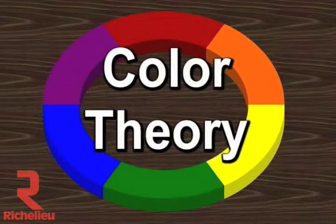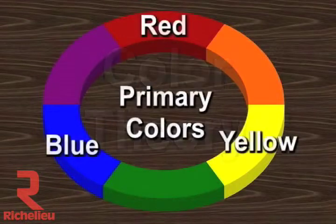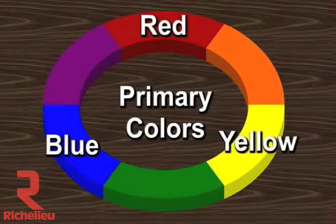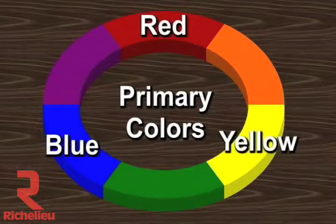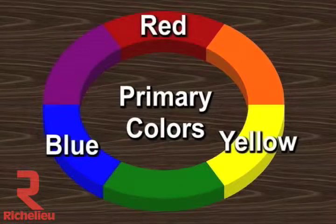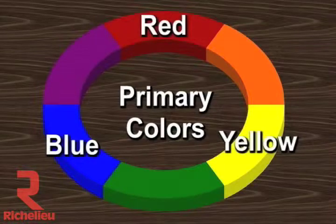First, some terminology. We'll begin with primary colors. The primary colors are red, yellow, and blue. They cannot be obtained by mixing any other colors. All other colors are made from these three, plus black and white.